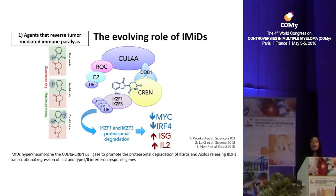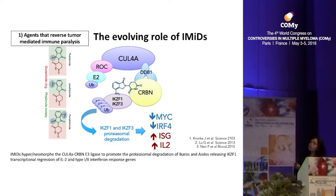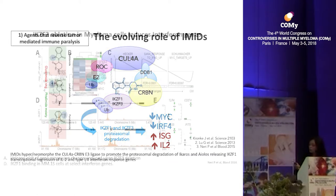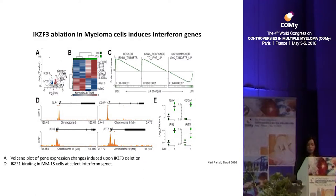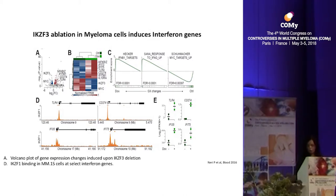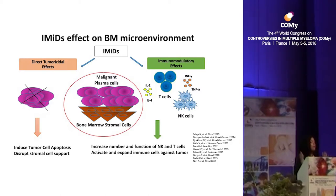The IMiDs are known to have a long-established anti-tumor effect, working through cereblon — an adapter protein of the CUL4A-DDB1-E3 ligase — inducing proteasomal degradation of two important transcription factors, leading to downregulation of MYC and IRF4 and myeloma cell death. More recently they have been shown to induce production of interleukin-2 and interferon-gamma. Our own group's data show that silencing IKZF3 induces an interferon signature through binding of Ikaros or Aiolos to promoters of interferon genes.